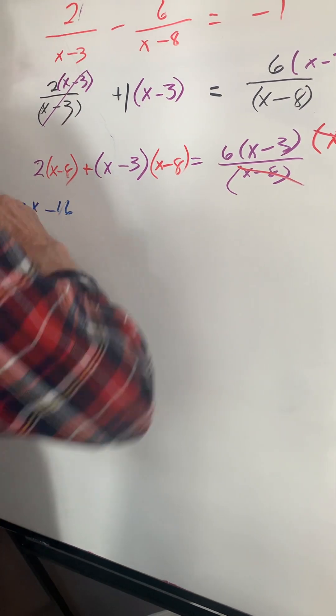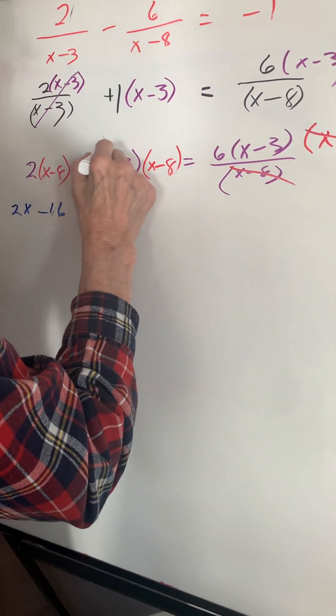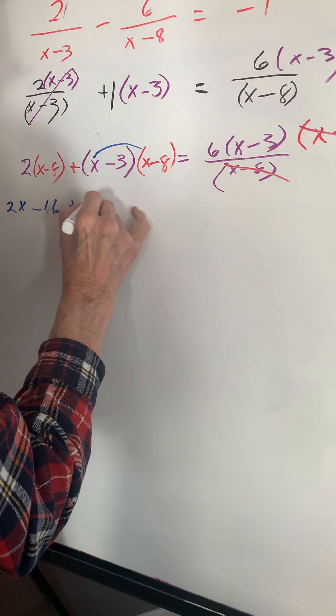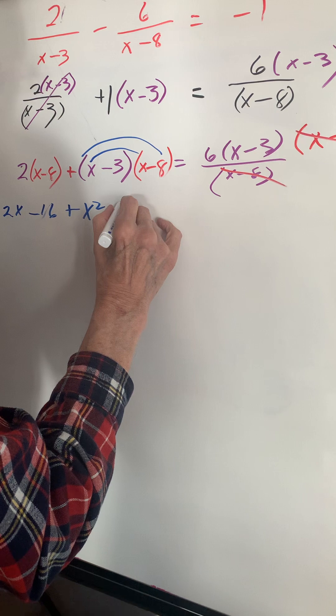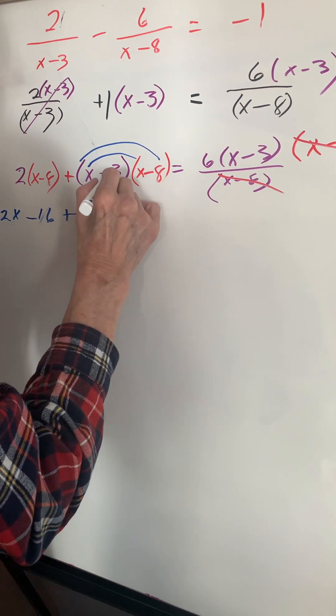We have to FOIL this. x times x is x squared. x times negative 8 is negative 8x. Negative 3 times x is negative 3x and negative 3 times negative 8 is positive 24.